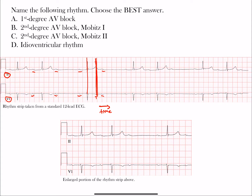We have a few different types of blocks to look at, and then there's one that sticks out: the idioventricular rhythm. Let's tackle that one first. This is a standard 12-lead ECG with an enlarged portion to see the smaller boxes. Idioventricular rhythm is a rhythm originating within the ventricles, meaning the rate is often between 20 and 40 beats per minute — a slow rate — and the QRS complexes will be wide, at least 120 milliseconds in duration.